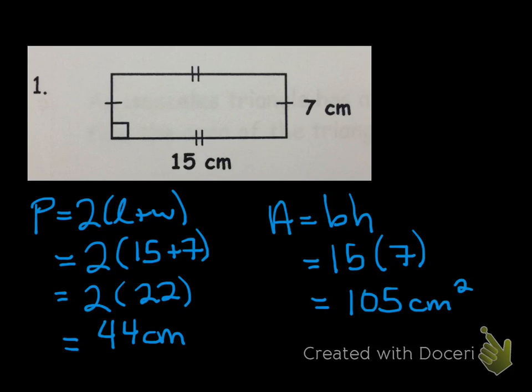Now the distinction to make is: remember perimeter is just centimeters — centimeters to the first power. But once you multiply 2 centimeters together, you get centimeters squared.